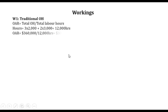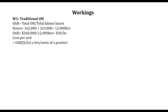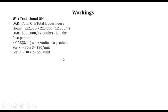Computing the overhead absorption rate: total overheads divided by total labor hours. Total overheads were $360,000 divided by 12,000 hours, giving $30 per hour. Then we determine the overhead cost per unit. Cost per unit equals the overhead absorption rate multiplied by hours per unit for each product. For product P, hours per unit is 3: so 30 times 3 equals $90 per unit. For product D, hours per unit is 2: so 30 times 2 equals $60 per unit.